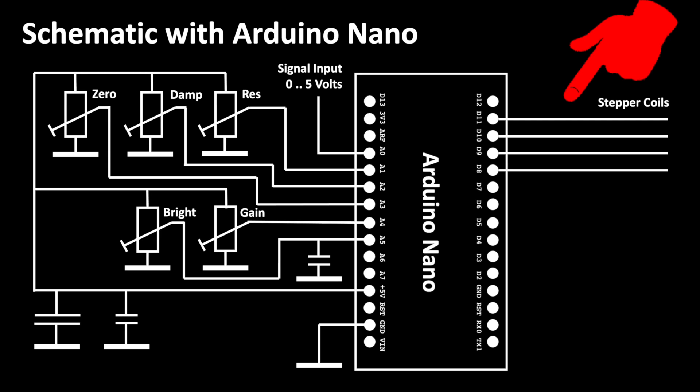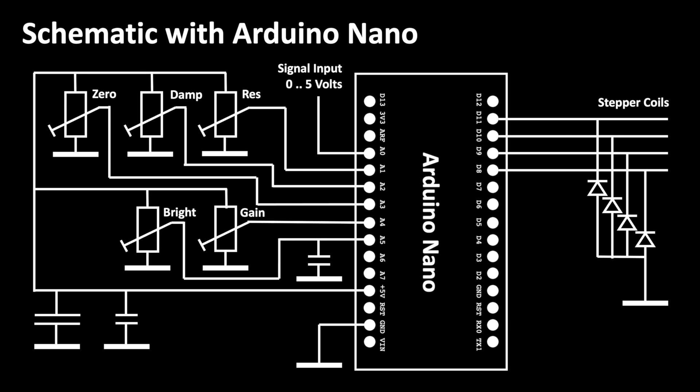An Arduino is capable to deliver this current directly from a digital output. However, it is advisable to install flyback diodes to avoid the voltage peaks that occur when the current is switched off at the coils. Without these diodes the voltage spikes would probably destroy the Arduino over time.